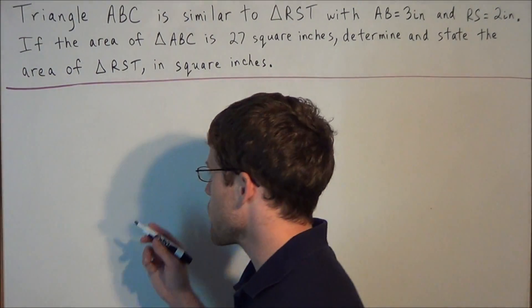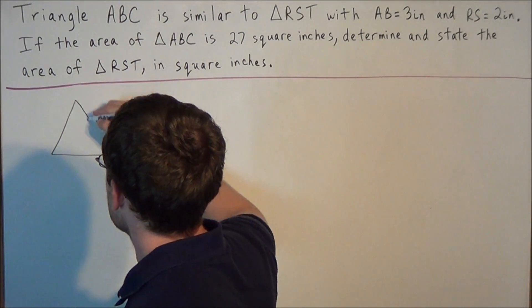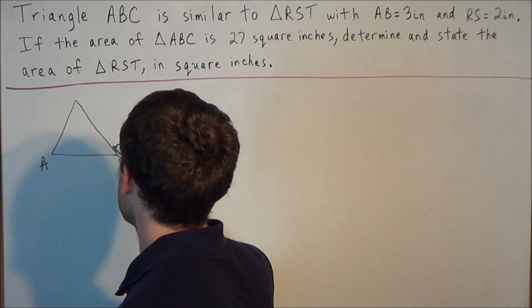So for this problem, the first thing we should do is get a visual of what's going on. So we draw our first triangle. We could call this triangle ABC.